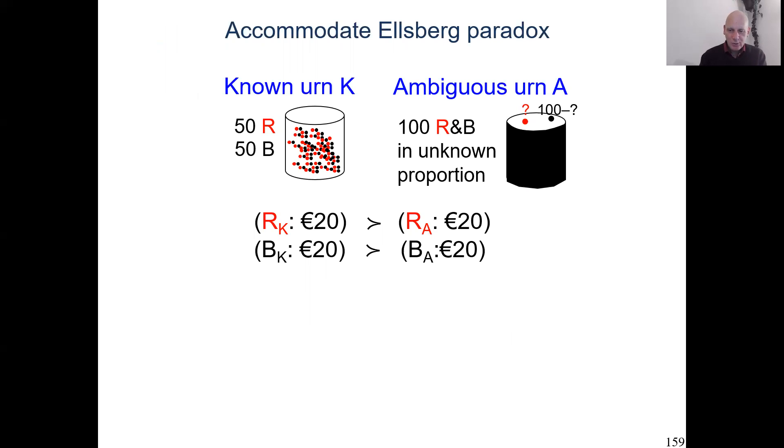Now I'm going to show you the solution. So here we have the rank-dependent utility of this prospect must be bigger than the rank-dependent utility of that prospect. I'm going to assume utility of 0 is 0. So then the rank-dependent utility of this prospect is simply the weight of that red event K times utility of 20 euro. The rank-dependent utility of this prospect is the weight of that event times utility of 20 euro.